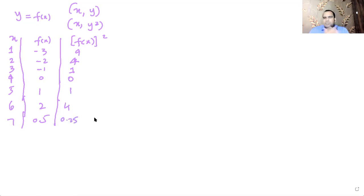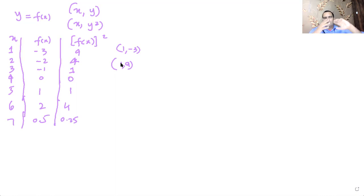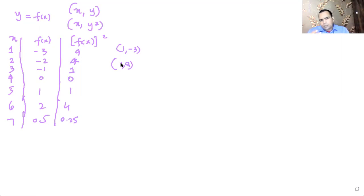What we notice is that the point that was at (1, -3) is now coming at (1, 9). Number one: there will not be any part on the graph below the x-axis for the squared function. Any y values that are negative get squared and become positive.